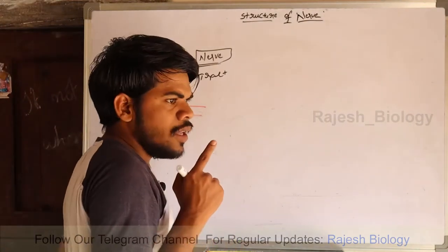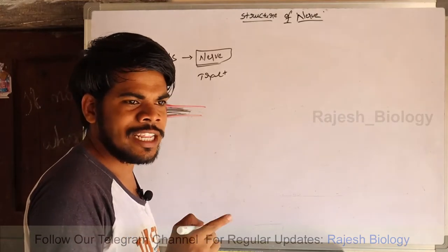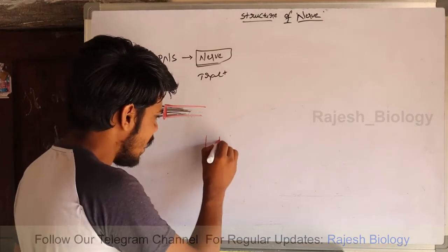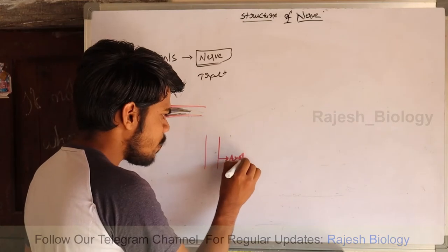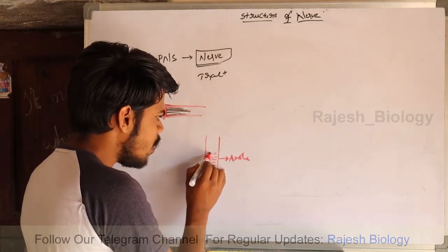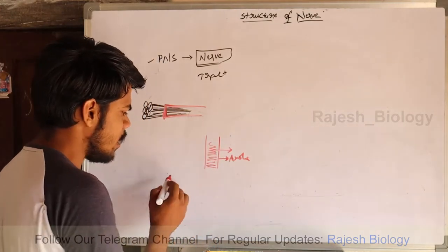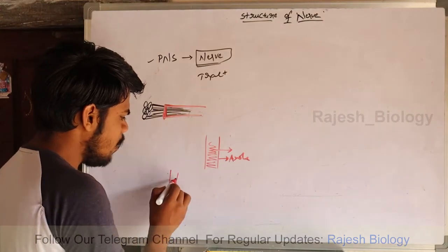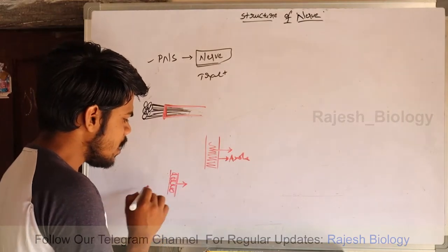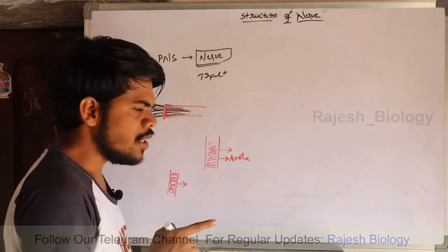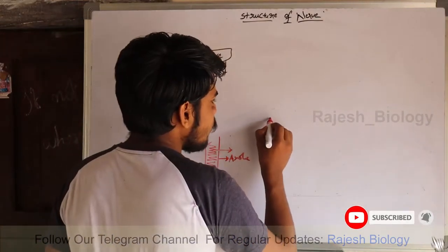The terminology of nerve is somewhat different, just like the terminology of axon. For example, the plasma membrane of an axon is known as axolemma, and the cytoplasm of an axon is known as axoplasm. Similarly, the plasma membrane of a muscle fiber is known as sarcolemma and the cytoplasm is known as sarcoplasm. The structure of nerve also has a different terminology.